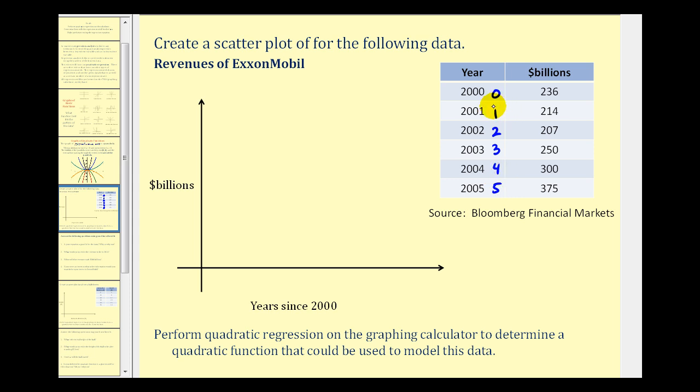So the first point we'll plot will be zero, 236. But before we do that, we should scale the axes to make sure our data will fit on the coordinate plane. Notice that I've also labeled the x and y axes. So the x axis must go from zero to five, and the y axis must include the values from 236 all the way to 375.